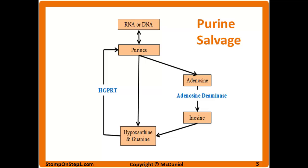Going back to the purine salvage slide, a deficiency of adenosine deaminase leads to a buildup of adenosine, which is toxic to B and T cells. This is one mechanism by which you can develop severe combined immunodeficiency, or SCID — a deficiency of B and T cells — so it's pretty serious. I'm going to cover that in more detail in the immunology section, but because it ties into this pathway, I wanted to mention it here.